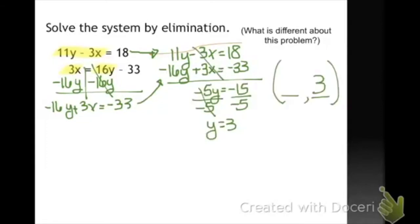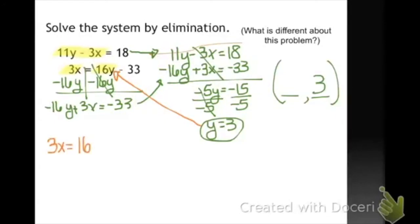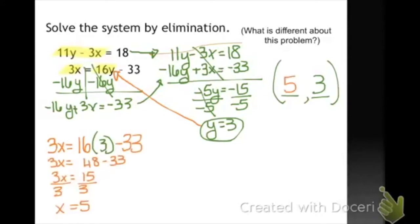So all I have to do is add the two equations together to solve them. So that gives me y equals 33. And then I take this y value and I'm going to plug it into one of my original equations — the second equation. So 3x equals 16 times 3 minus 33. And I get that x equals 5. Remember, you can always rewrite the equation so both equations are similar before you start with elimination.